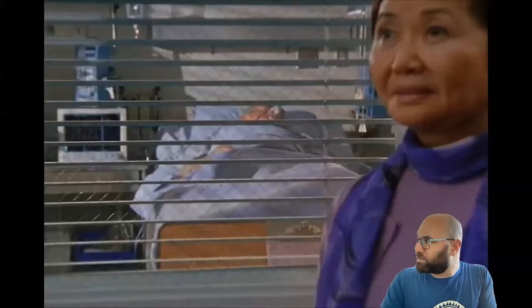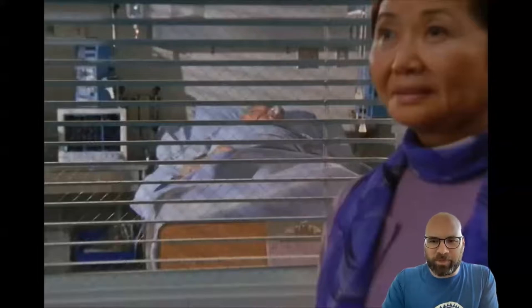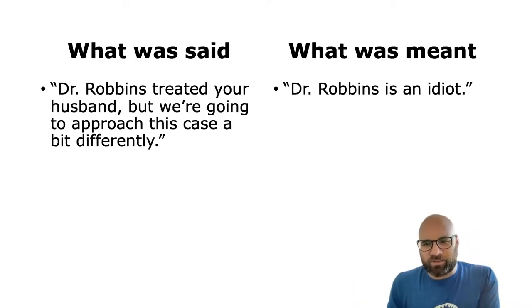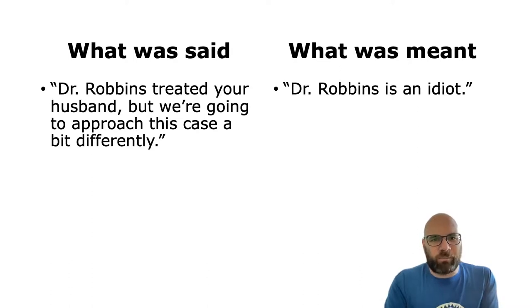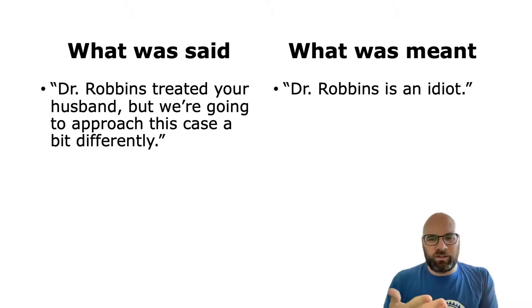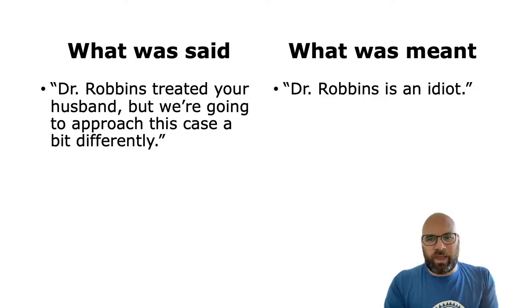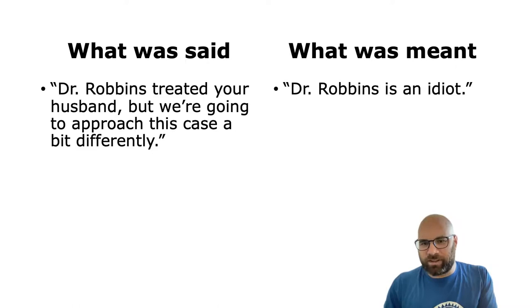That clip was another example of people saying something that's different from what they mean. This brings us to the pragmatic concepts — in pragmatics we talk about two things: 'what was said' and 'what was meant.' What was said refers to literally what a person said, what it literally means. What was meant is the figurative meaning, or the meaning between the lines — what they actually mean by what they said.